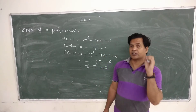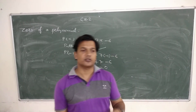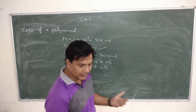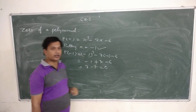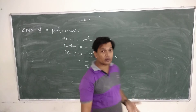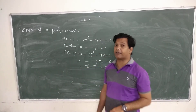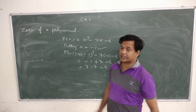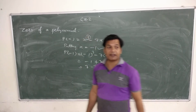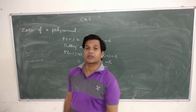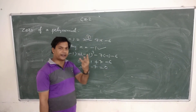Meaning that x is a zero of a polynomial — put that value in the polynomial and it equals zero. How many zeros occur for a polynomial? It depends on the greatest power of the polynomial. Here the power is 3, so the number of zeros for this polynomial is 3.